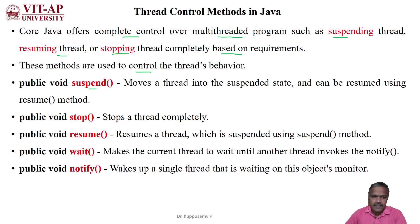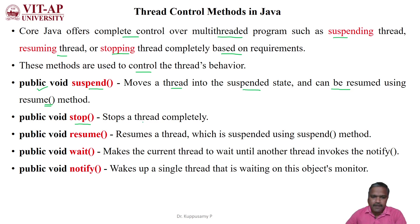The first method is suspend. We can use this as a public method which moves a currently running thread into the suspended state, and it can be resumed using another method called resume. Another method is stop, which completely terminates the currently running thread in the program.